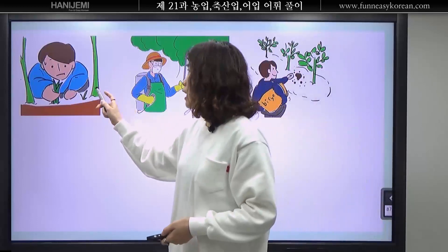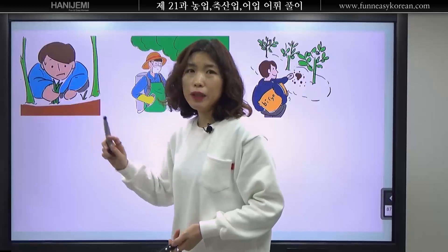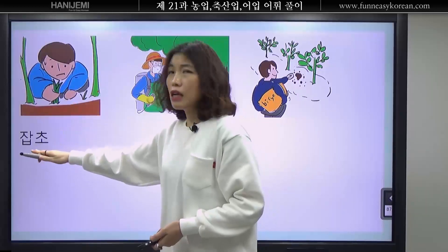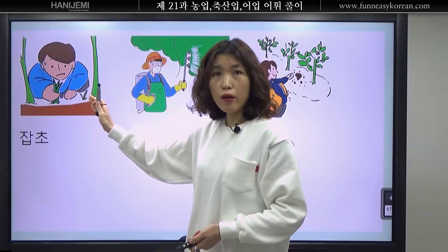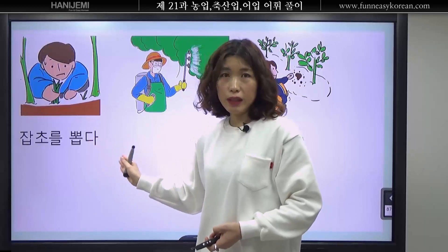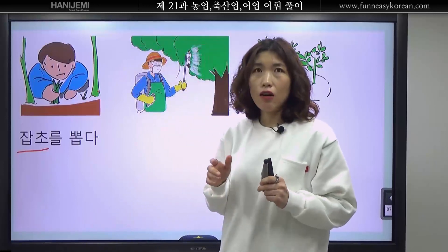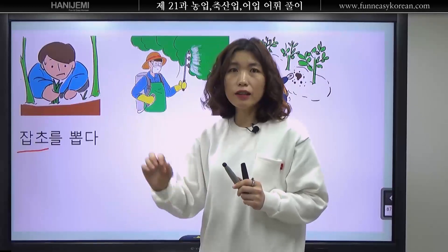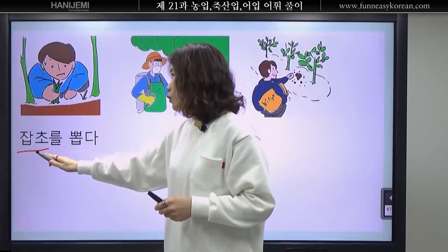지금 이 사람은 이거 키우고 있어요. 그런데 이거는 필요 없어요. 이거는 나쁜 풀이에요. 그래서 나쁜 풀 잡초라고 합니다. 잡초가 있으면 안 좋아요. 잡초를 뽑아야 돼요. 잡초를 뽑다. 잡초는 여러분이 만약에 쌀을 키워요. 벼 말고 다른 것이 잡초예요. 그 안 좋은 풀이죠. 잡초를 뽑다.